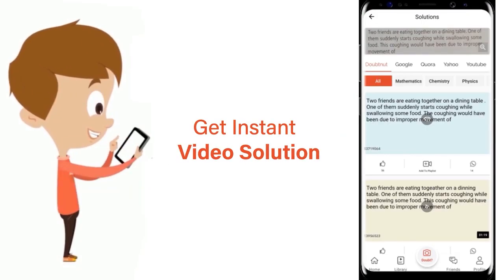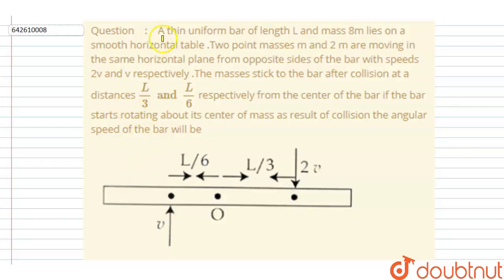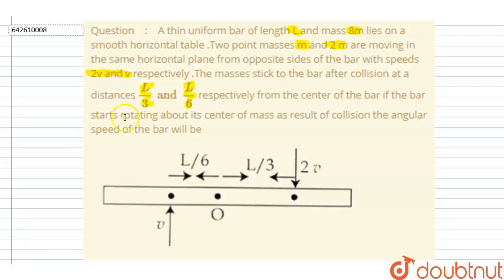A thin uniform bar of length l and mass 8m lies on a smooth horizontal table. Two point masses m and 2m are moving in the same horizontal plane from opposite sides of the bar with velocities 2v and v respectively. The masses stick to the bar after the collision at distances of l/3 and l/6 respectively from the center. Find the angular speed of the bar after the collision.